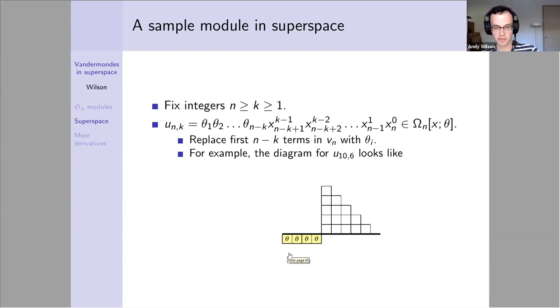What kind of modules are we going to look at in super space? This is our first sample, this module here. I'm going to start with a certain super monomial, which looks like the staircase except it falls off a cliff at some point. I've taken the first n minus k steps here and replaced them with thetas and no powers of the x_i's. This is the formal definition of u_nk. You can see that if k is n, we recover the Vandermonde case. There's no theta variables in that diagram.